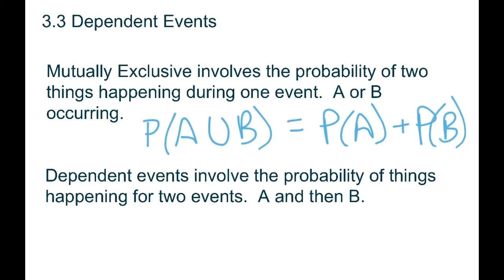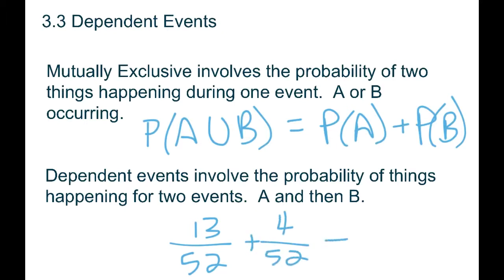For example, if we did hearts or clubs, you'd have 13 out of 52 and 13 out of 52 — you'd add them together to get 26 out of 52. If we said what's the chances you got a heart or a seven, we'd have 13 hearts, four sevens, but we had to subtract any overlap — the ones that are hearts and sevens — which was one out of 52.